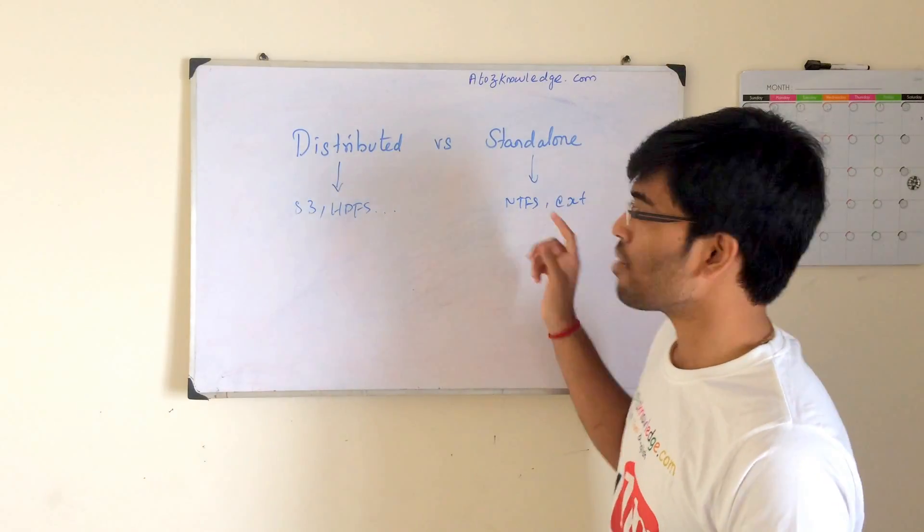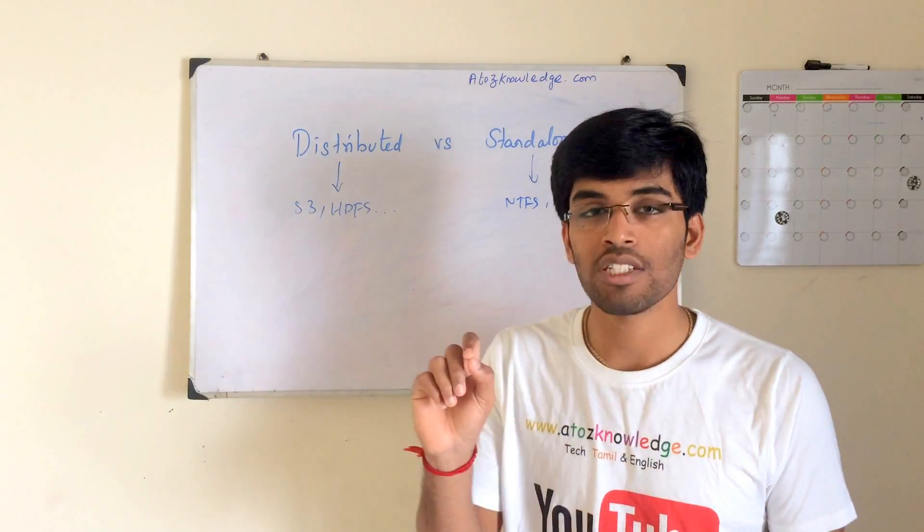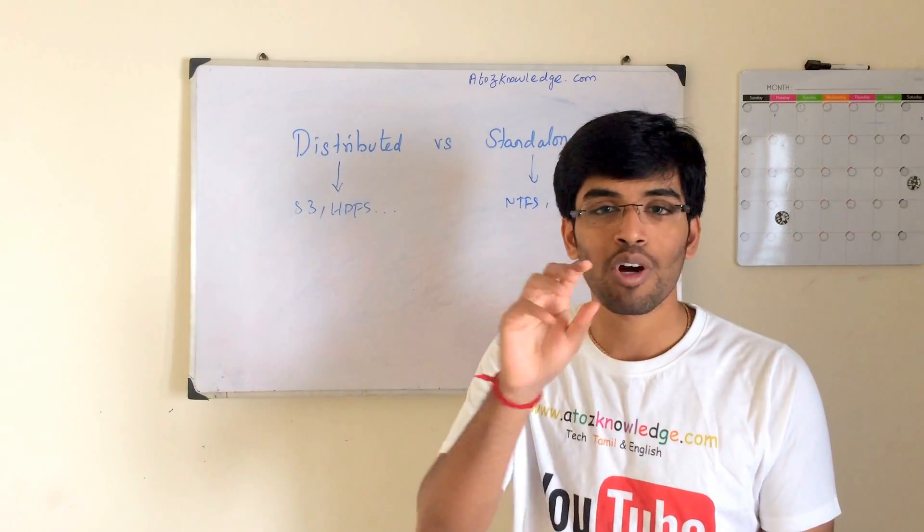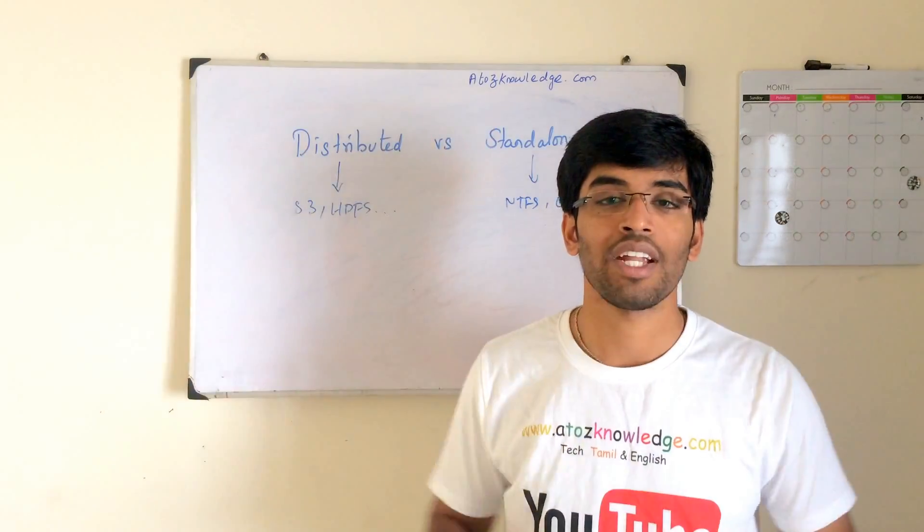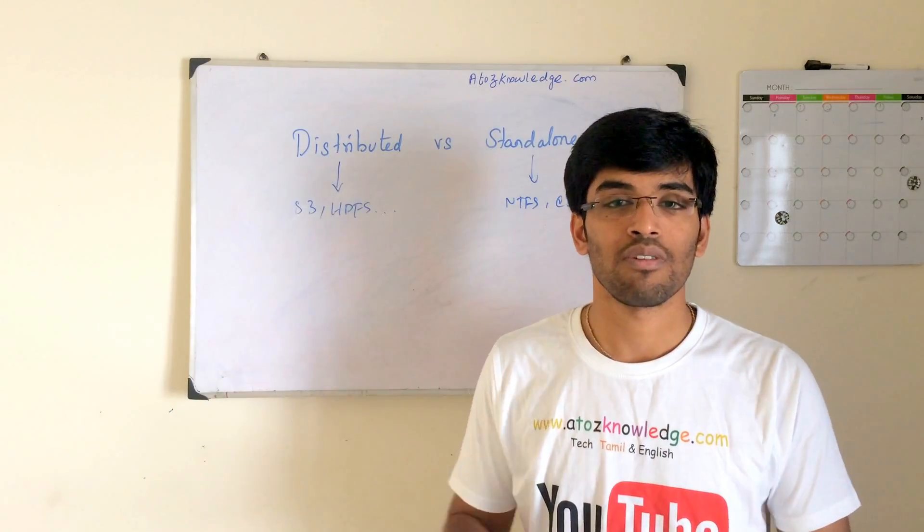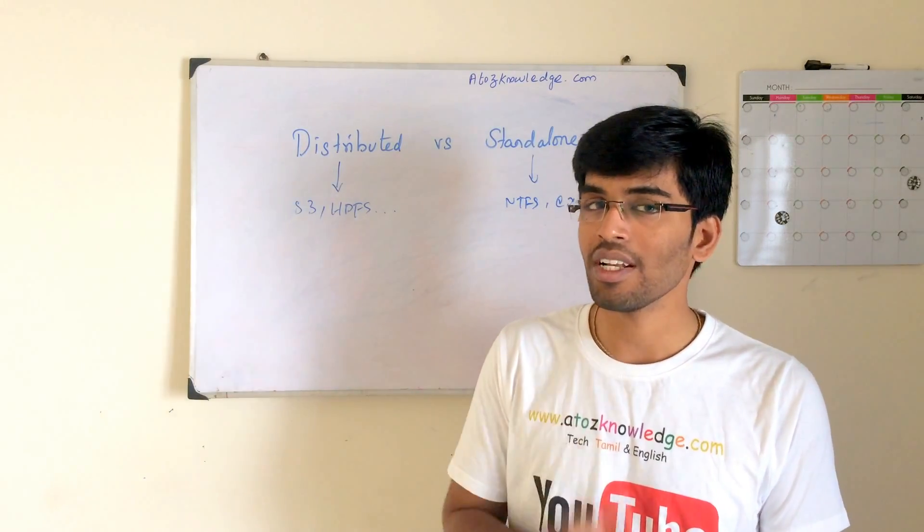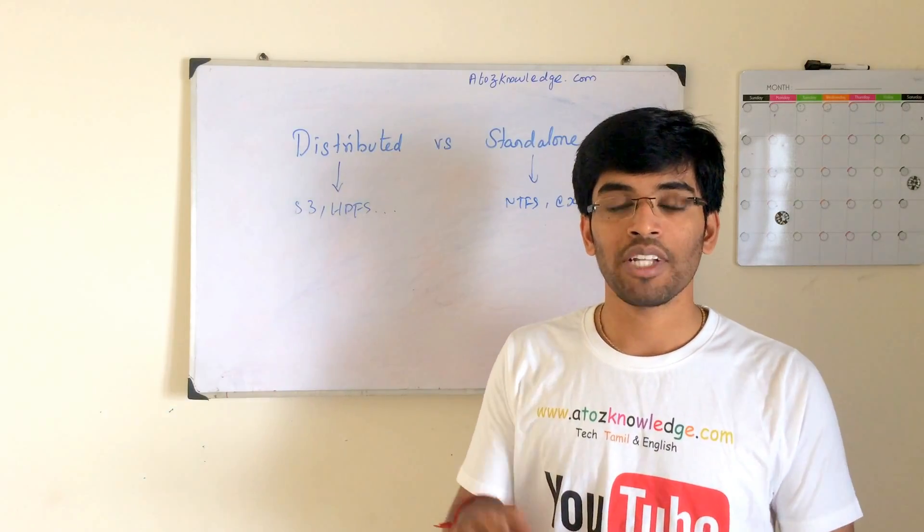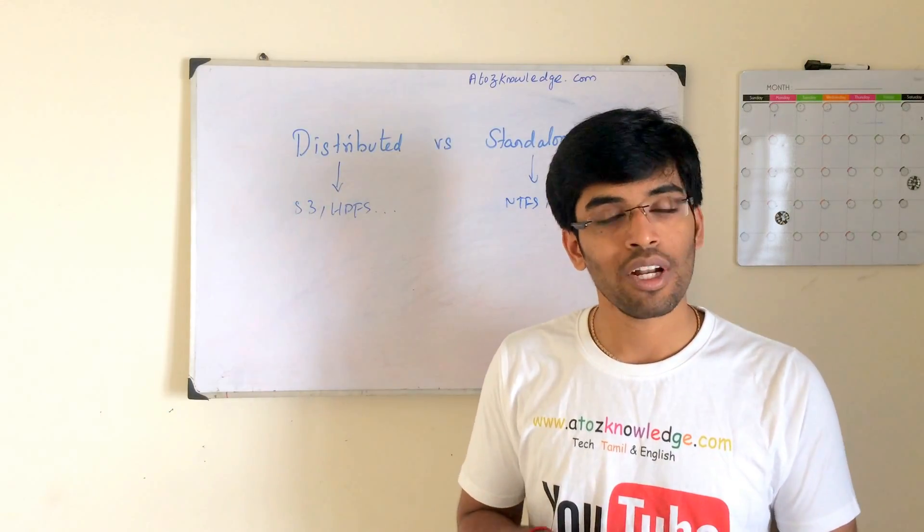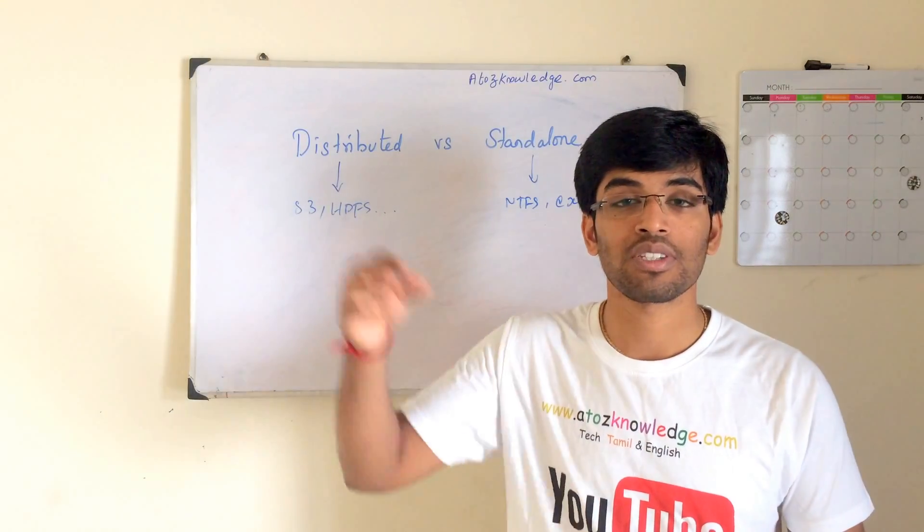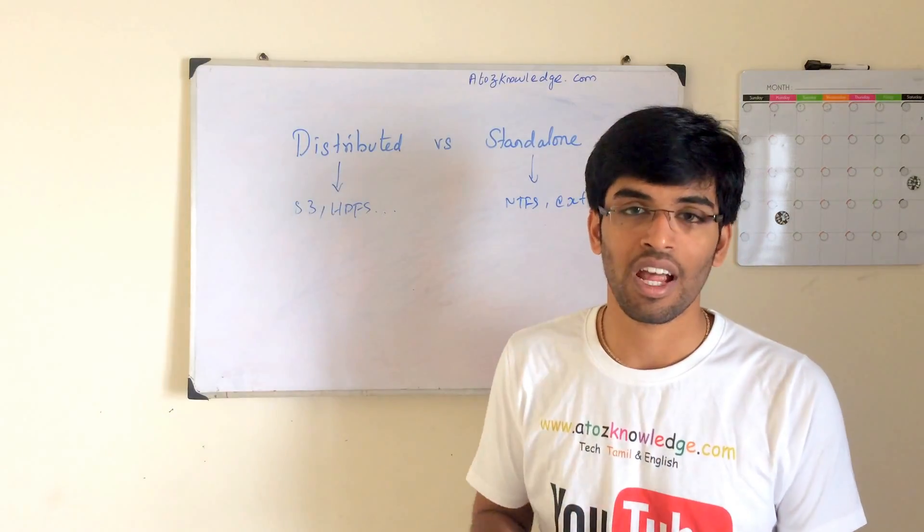Whereas if I do the same thing with the Windows file system, I am giving 1 GB file to the first Windows file system. It will never split that into small, small data and it will never divide it across the machines, which it will never do. So that is where the difference between distributed and standalone. So even though you have 10 Windows machines connected in a LAN or a network, it is not at all a distributed one.